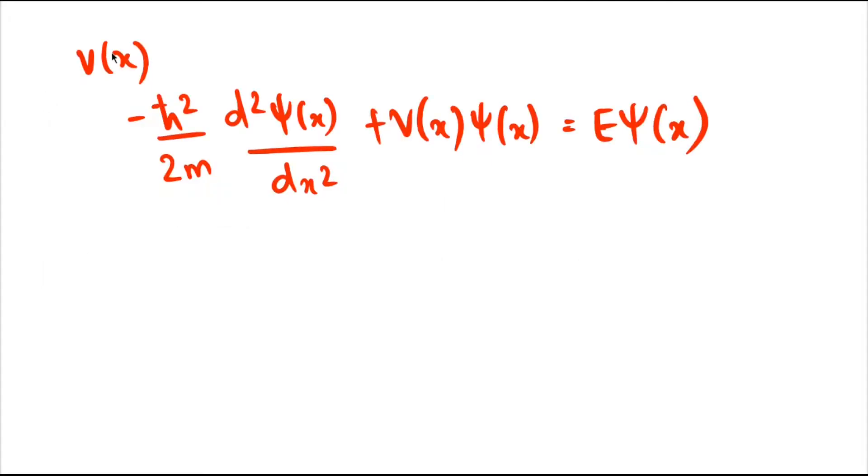Consider a microscopic particle performing 1D motion along the x-axis under the influence of a time-independent potential V(x). The Schrödinger equation describing the dynamics of this particle is given by this equation.